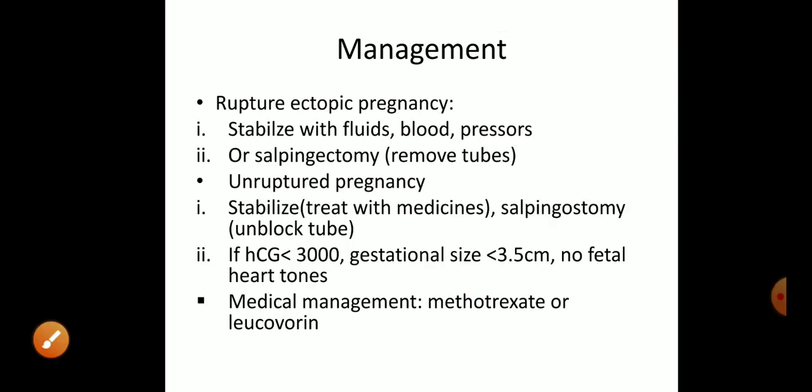Next is management. If the ectopic pregnancy is ruptured, this occurs because in tubal pregnancy, implantation is in the fallopian tube. As the ovum grows, the size increases and puts pressure on the tube walls, which are small, causing rupture. Rupture is a serious complication of ectopic pregnancy.